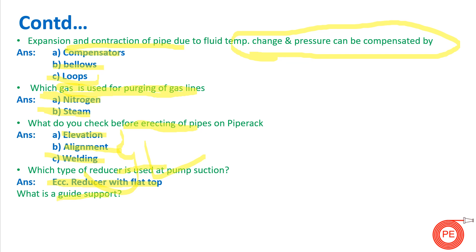What is a guide support? There are different types of supports used in piping. A guide support allows horizontal movement of the pipe — so horizontal movement of the pipe is allowed with the help of a guide support.